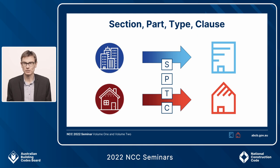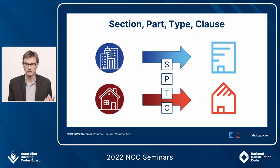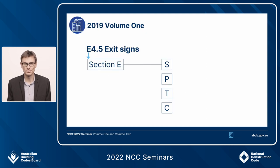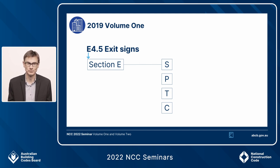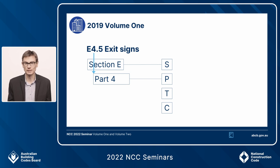The best way to explain how this Section Part Type Clause system works is by showing an example from NCC 2019 translated into 2022. Here is E4.5 exit signs as specified in NCC 2019. Under the existing referencing system, we know that E4.5 exit signs is in Section E because the designation starts with the letter E. Next comes Part — we know it's in Part 4 because after the E comes the number 4.